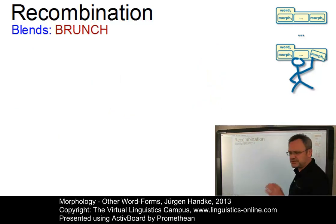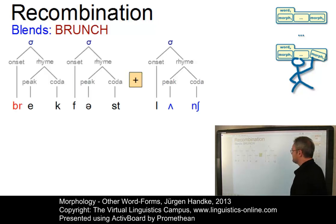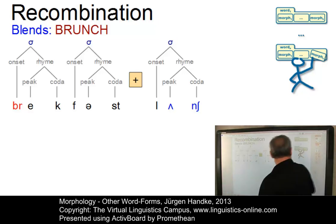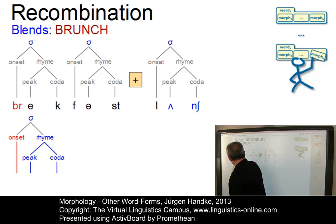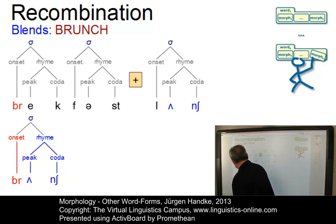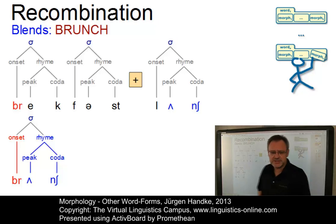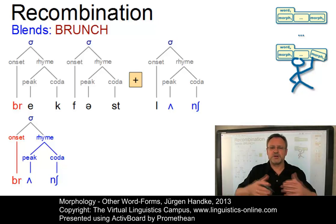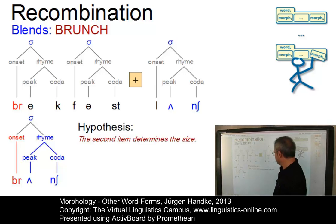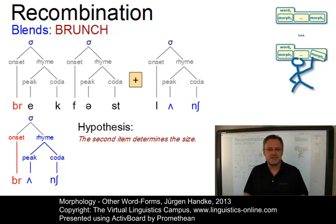Taking 'brunch' next, the situation is slightly different. Here we have two words with different syllable structures: 'breakfast' consists of two syllables and 'lunch' of one. The result is the onset of 'breakfast' and the rhyme of 'lunch', but the blend is only one syllable long. The factor that determines the syllable length of the resulting blend is the second item — using 'breakfast' and 'lunch' resulting in 'brunch', we can conclude that the length of the second item determines the size of the blend.